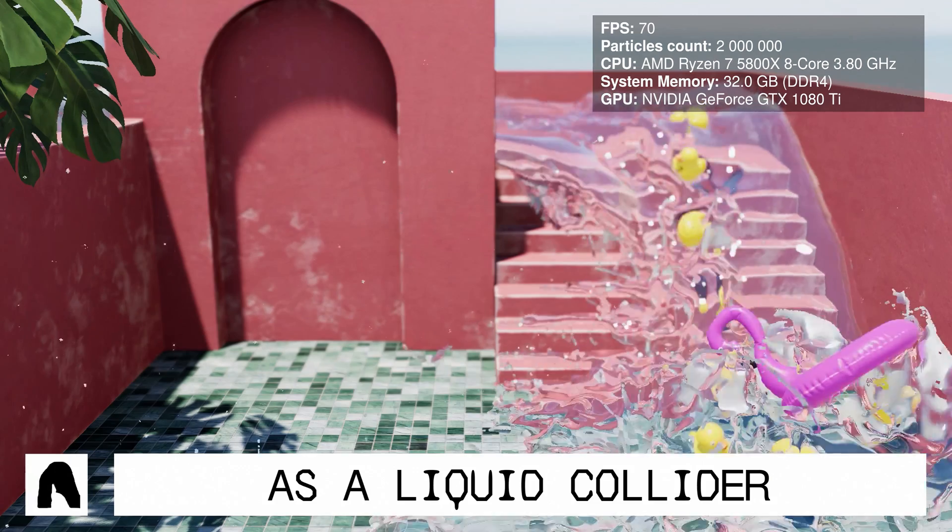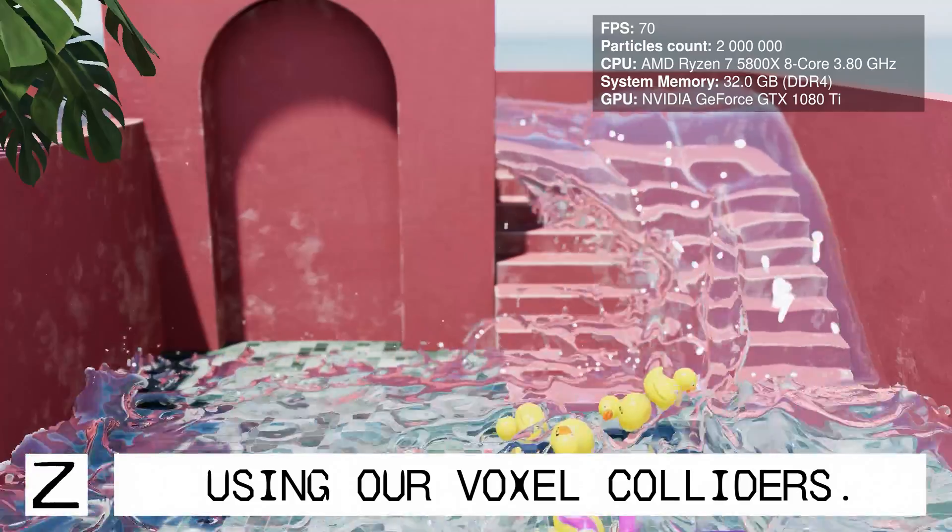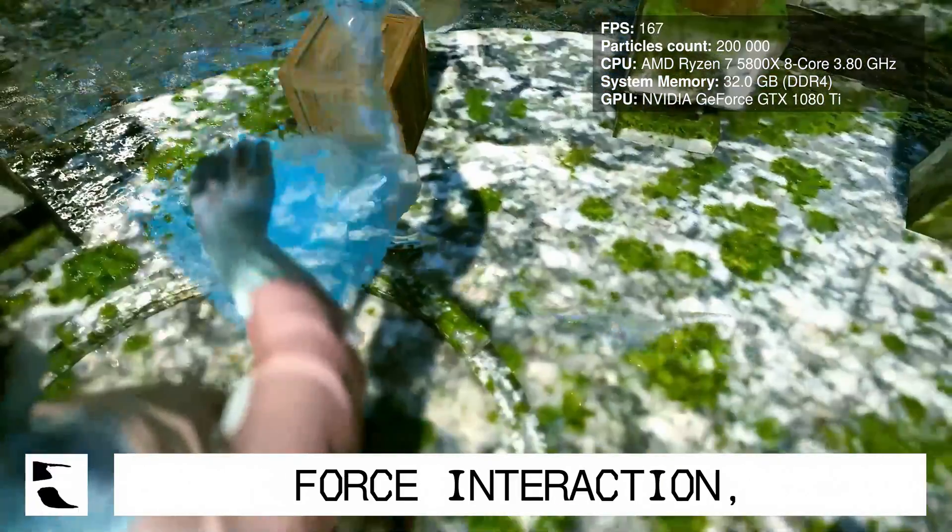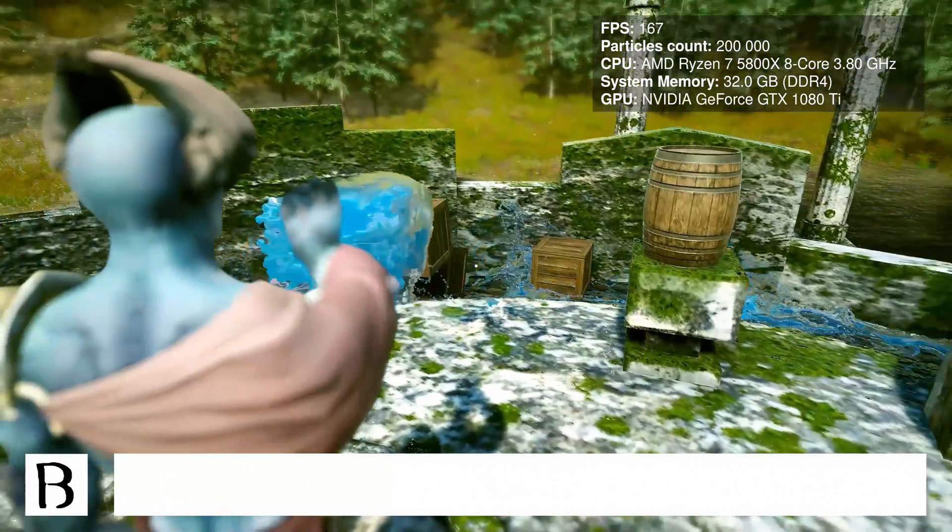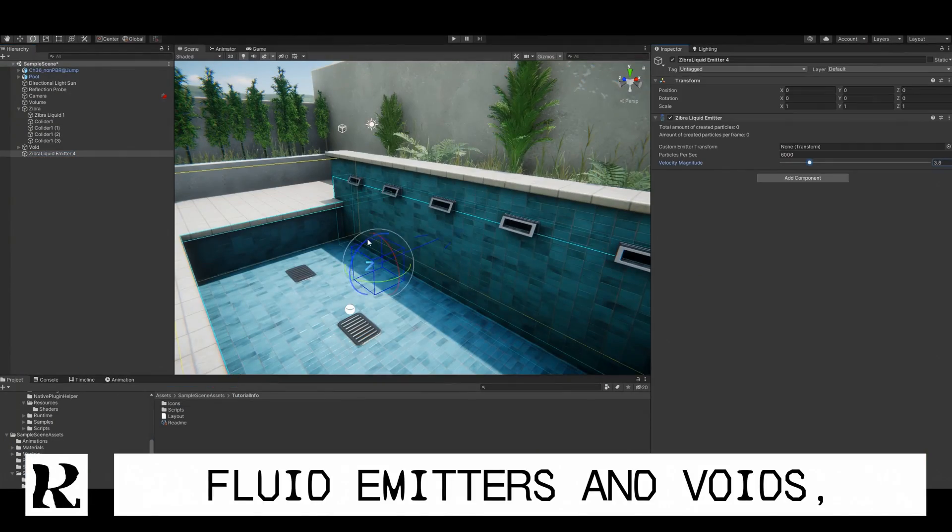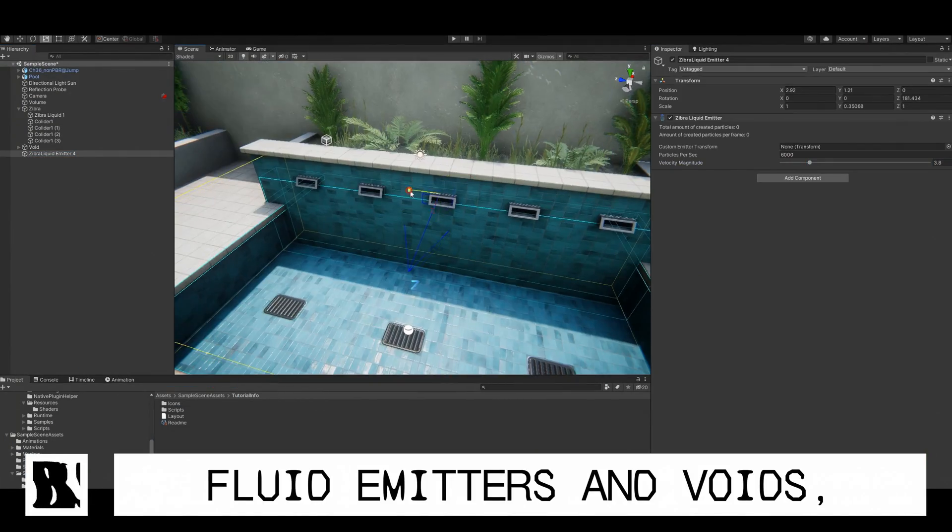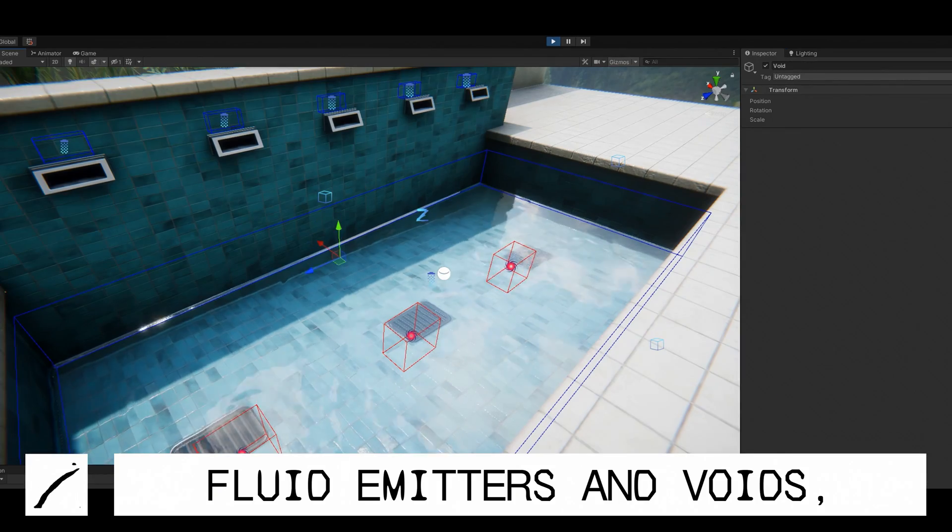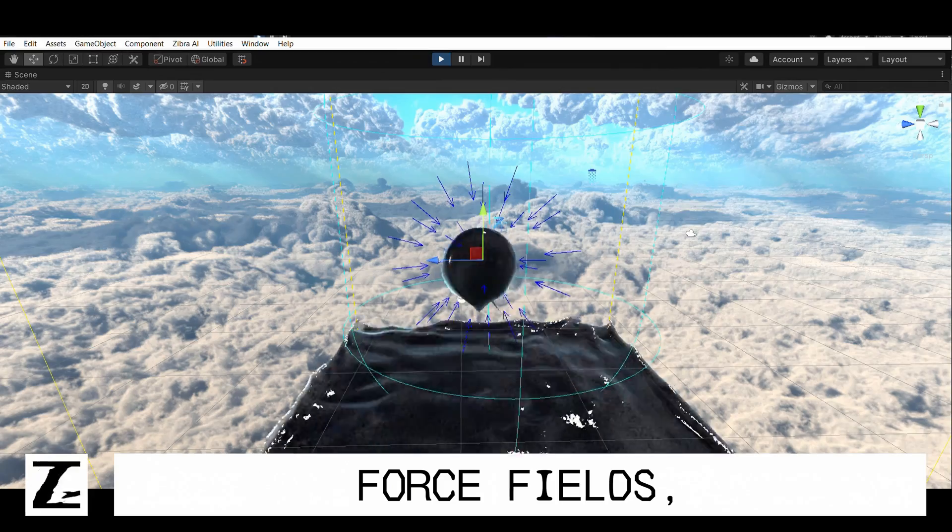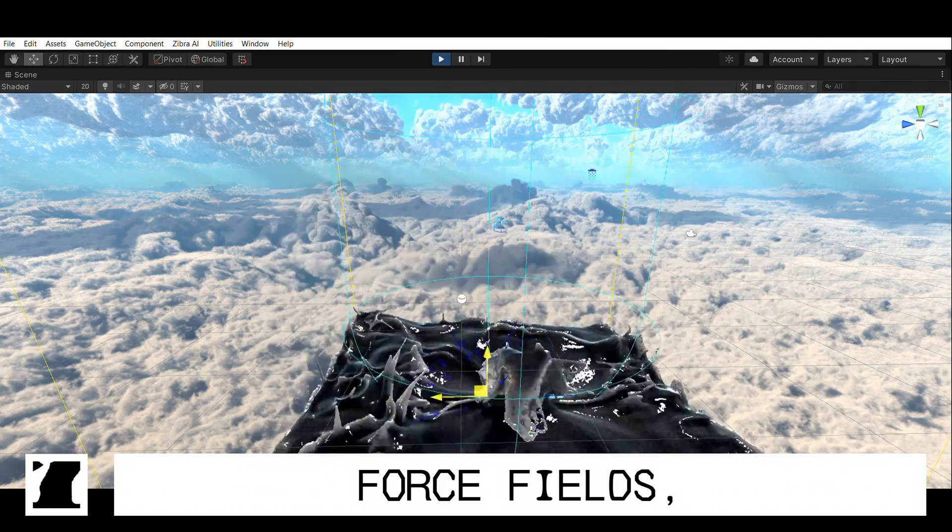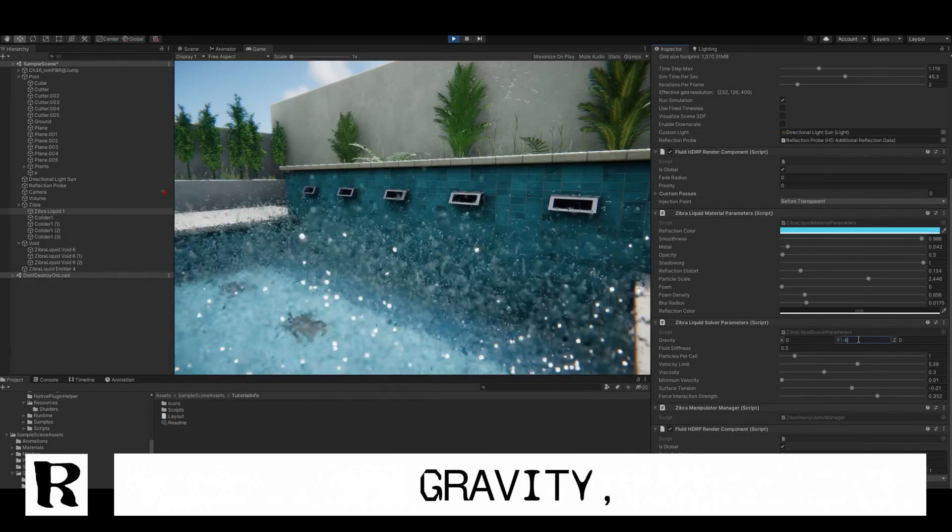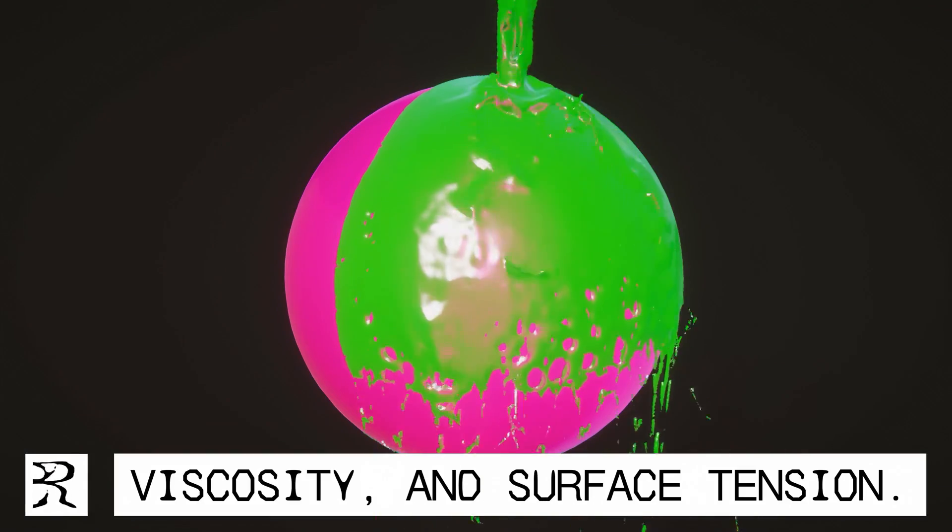Any arbitrary geometry is a liquid collider using our voxel colliders. Everything is in the user's control: force interaction, fluid emitters and voids, force fields, gravity, viscosity, and surface tension.